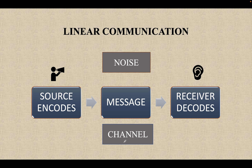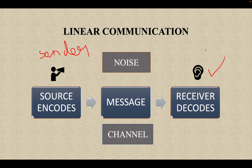The channel could be anything — WhatsApp, Instagram, email, whatever. The source is the person who is sending the message — he is the sender. He is sending a message and there is a receiver. In linear communication, the sender sends a message to the receiver, but the receiver is not replying to the message. This linear communication is one-way communication.